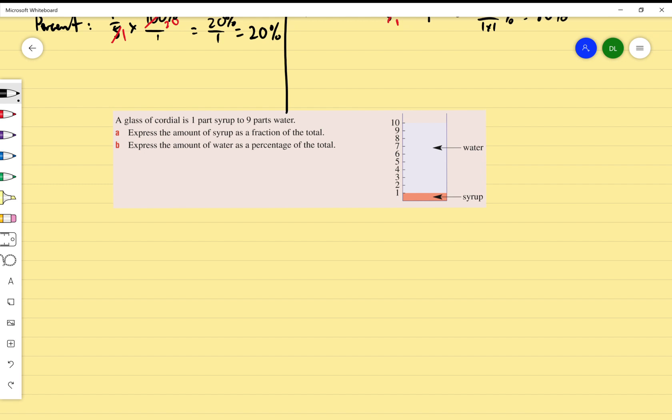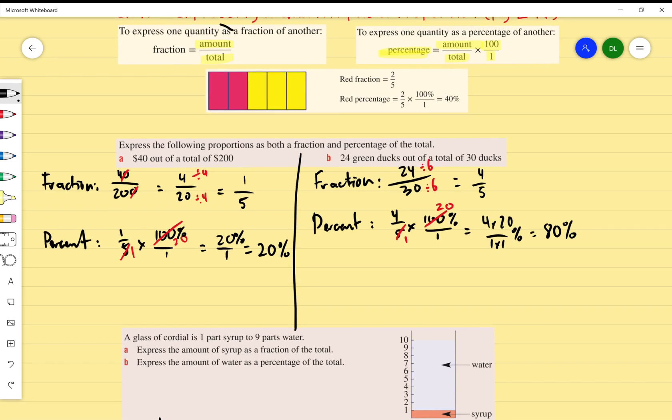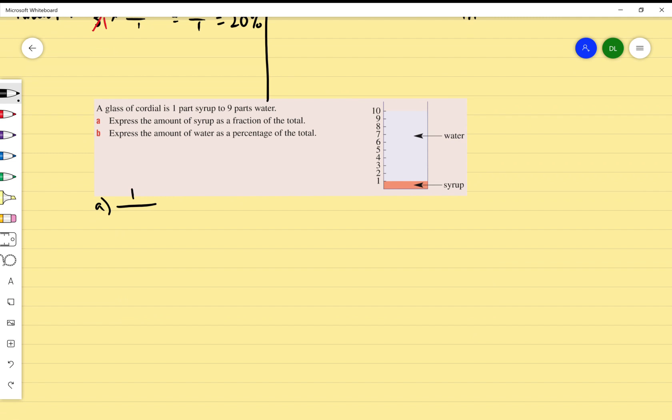Express the amount of syrup as a fraction of the total. We're going to focus on the syrup. I can see I've got one part syrup and nine parts water, which gives me a total of 10 parts. So if I've got syrup, I've got one part syrup—remember our formula from above—so I've got my syrup which is 1 out of a total of 10. That's it: 1 over 10.